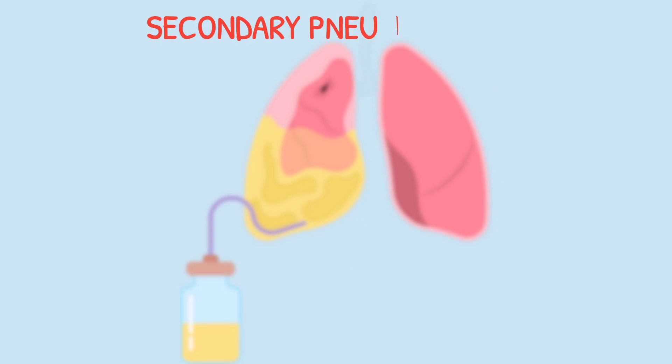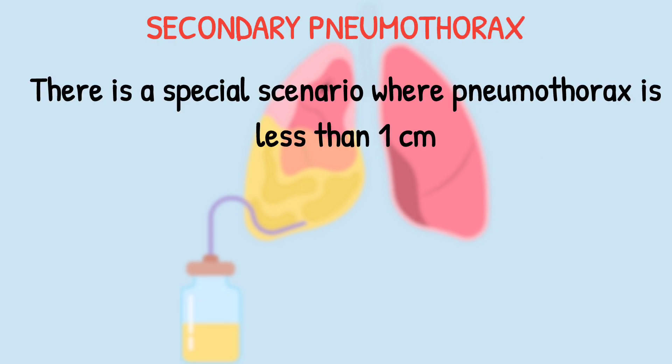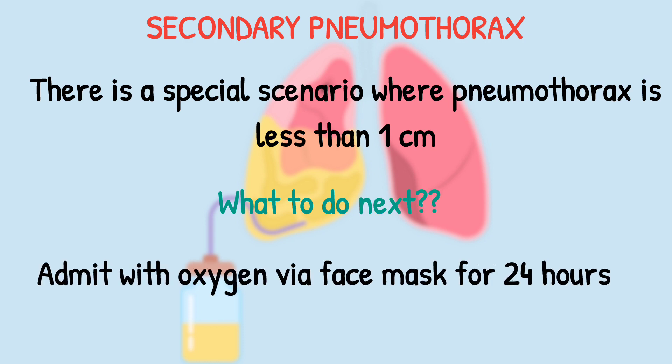There is a special scenario where the secondary pneumothorax is less than one centimeter — very small. Even in this situation, we have to do something: admit the patient with oxygen via face mask for 24 hours.